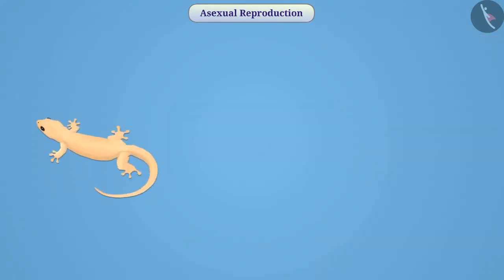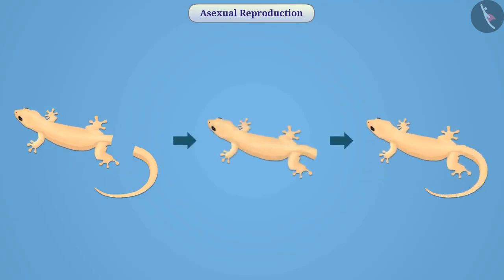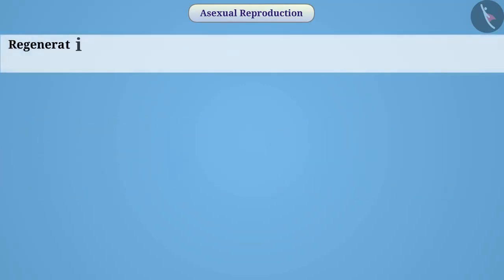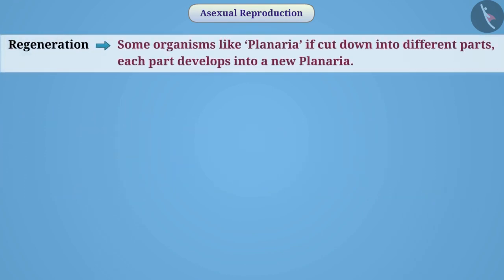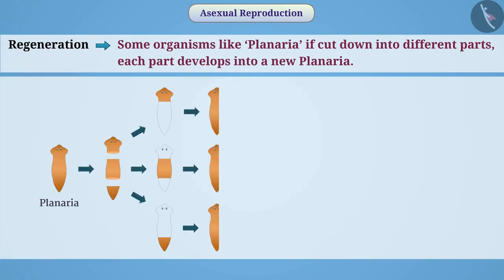You must have seen that lizards separate their tail from their body under adverse circumstances, and later the lizard regenerates its tail again. Similarly, in the method of regeneration, if some organisms like planaria are cut into different parts, each part develops into a new planaria. This method of reproduction can also be seen in hydra.